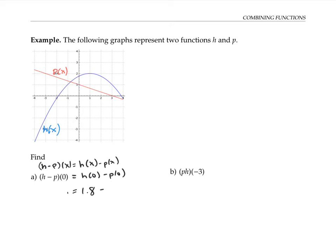Now, p of zero we can find similarly by looking for zero on the x axis and finding the corresponding y value for the function p of x, and that's a y value of one. 1.8 minus one is 0.8. So that's our approximate value for h minus p of zero.